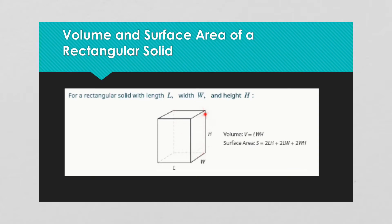The front face is the same as the back, the top is the same as the bottom, and the sides — there are two of those that are exactly the same too. That's why with surface area you have 2 times your length times your height, plus 2 times your length times your width, plus 2 times your width times your height. And to find the volume, it's just length times width times height.